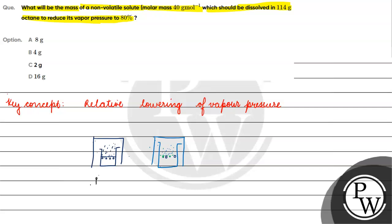In this case, the vapor pressure of the pure solvent is p0 and the vapor pressure of the solution is ps. The formula for relative lowering of vapor pressure is: (p0 minus ps) divided by p0, which equals the mole fraction of the solute.